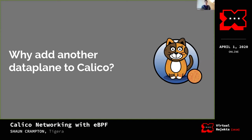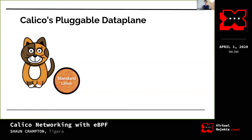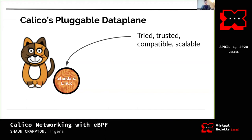Why add another data plane to Calico? We designed Calico from the ground up — it's one of the leading CNI networking plugins and network policy engines for Kubernetes. We designed it with a pluggable data plane architecture. We have a general philosophy of trying to use the best tool for the job in each environment. On Linux, we started with our standard Linux data plane using IP tables and IP routing, because it's tried and trusted, compatible with a wide range of distros and kernels, and also scalable. The routing architecture on Linux is very scalable and we were able to scale IP tables to implement our rich policy.